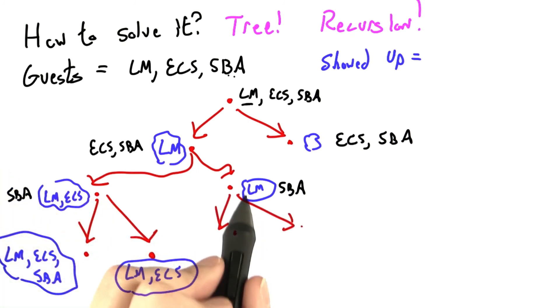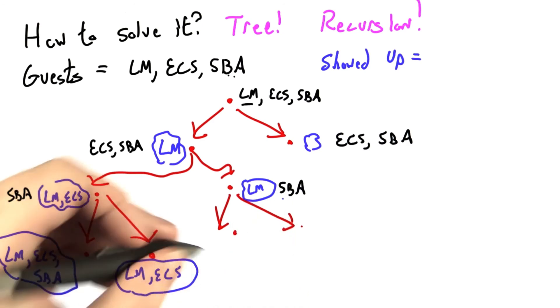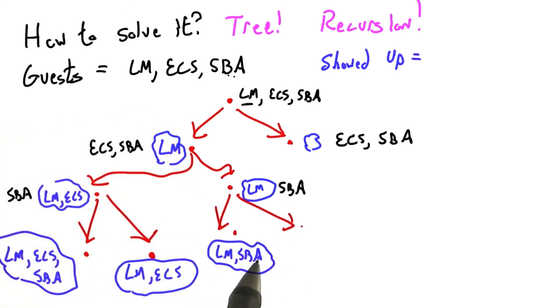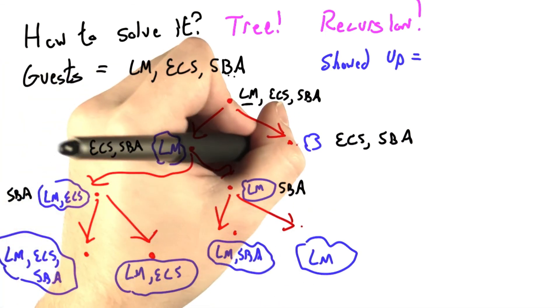Back over here in this possible world, only LM has shown up so far. Let's go invite SBA. One possibility is that SBA shows up. Another possibility is that she does not. And you can see how this pattern would repeat in the other side of the tree. I'll just do it here quickly.